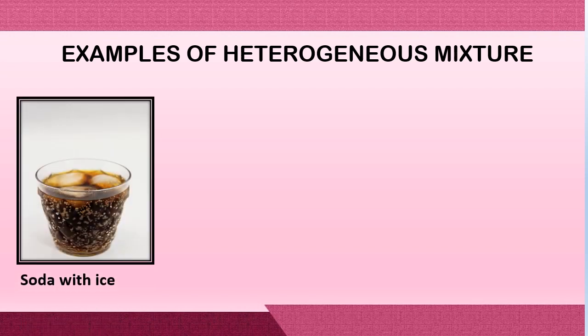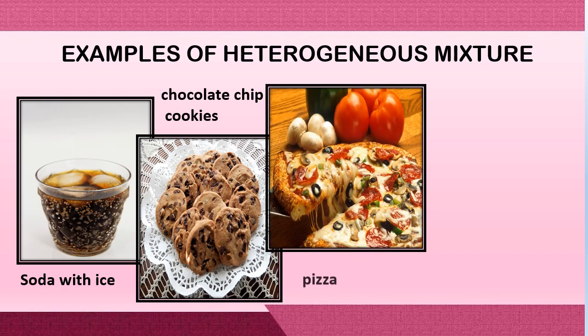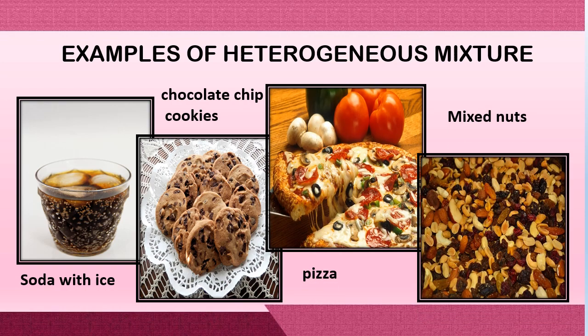Here are some examples of heterogeneous mixtures: soda with ice, chocolate chip cookies, pizza, and mixed nuts. In heterogeneous mixtures, you can easily identify the different components in a certain mixture. For example, in a pizza, you can easily identify the different kinds of ingredients such as cheese, pepperoni, and other kinds of ingredients. In soda with ice, you can easily identify the solid phase and the liquid phase — the soda is the liquid and the ice is the solid.